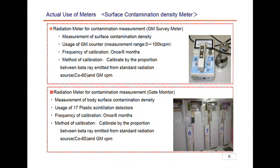Now we will introduce the devices actually used for measurements. Please look at page 9. We use this radiation contamination measurement device, GM tube type survey meter, when things are taken out of the controlled area or when you conduct a screening. On the right side of the device, you can find a silver cylinder, and this indicates the instrument reading when you put it near the surface of the object material. It is used for measuring the contamination density on the surface, and during calibrations usually conducted once every six months, we calibrate them by the ratio of the number of beta rays that emits cobalt-60 with a standard radiation source or the number of counts of the GM tube.